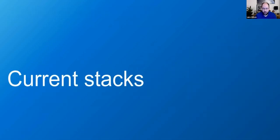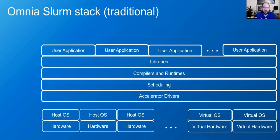Omnia builds two different configurations and can run them independently on a cluster or both simultaneously. The first is the Slurm stack, and we have two different variants. We can use a very traditional Slurm stack where we install libraries and compilers and runtimes directly into the OS layer. We try to leverage other good projects wherever we can, so we can actually deploy OpenHPC RPMs directly on top of the base Omnia deployment. That gives us the compiler, runtime, library, and user application stacks we're used to.